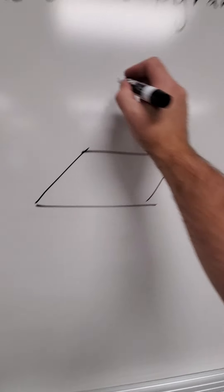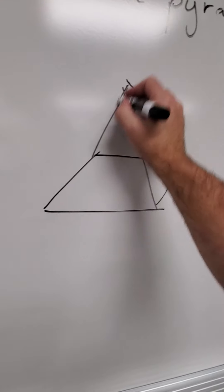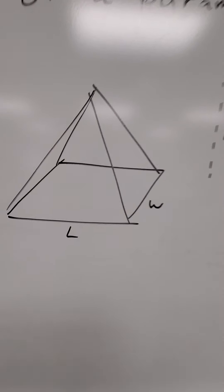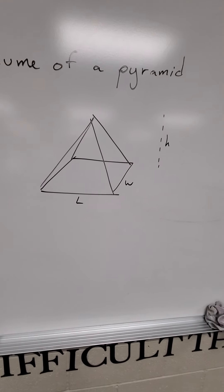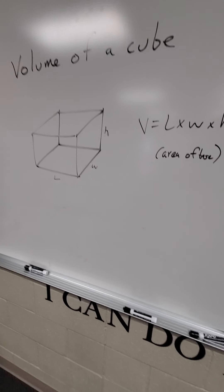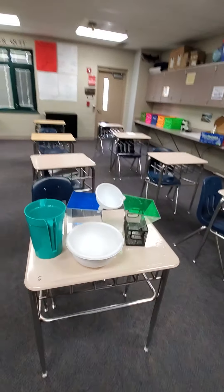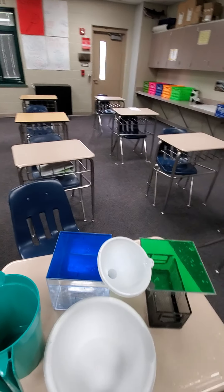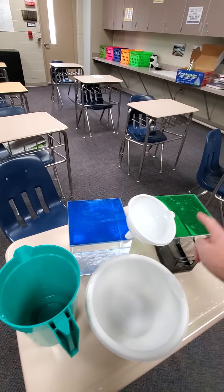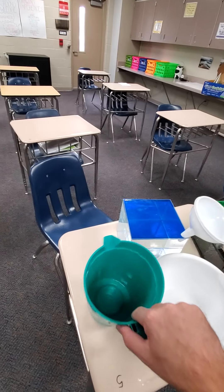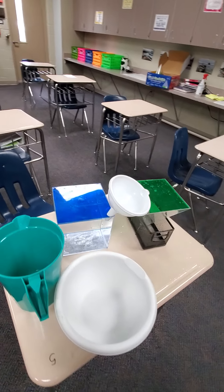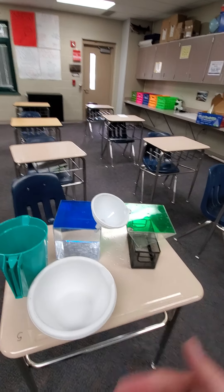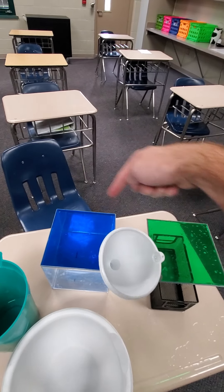Now, let's talk about a pyramid. A pyramid also has a length, width, and a height. However, a pyramid does not have the same volume as a cube. So I've got a cube right here and a pyramid right here, and I'm going to show you the relationship between a cube and a pyramid using some water. The pyramid and the cube have the same height, the same length, and the same width.